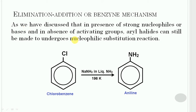However, in the absence of such activating groups, the aryl halide can still be made to undergo nucleophilic substitution reaction, but this reaction will take place only in the presence of a strong nucleophile such as sodium amide in liquid ammonia. For example, chlorobenzene treated with sodium amide in liquid ammonia at 196 Kelvin will give aniline.